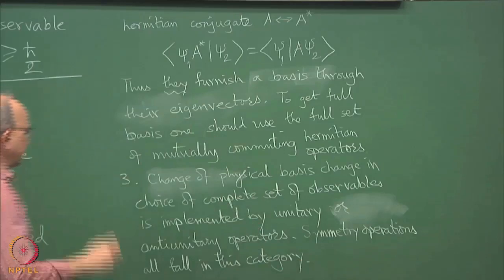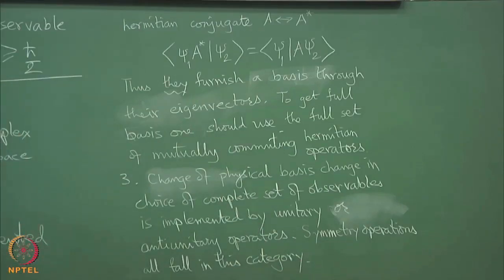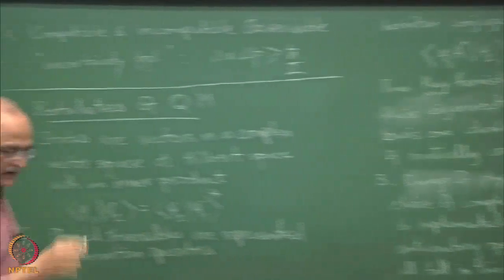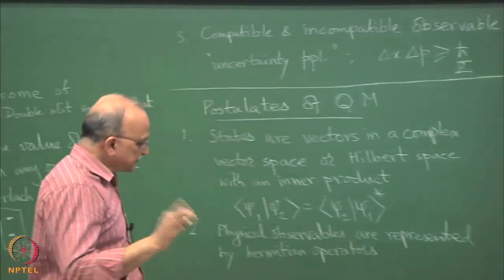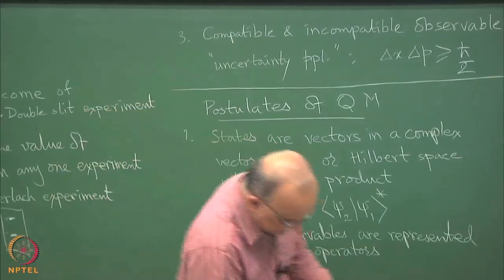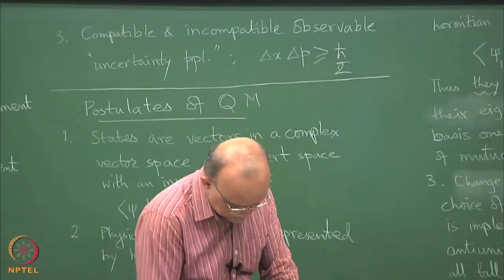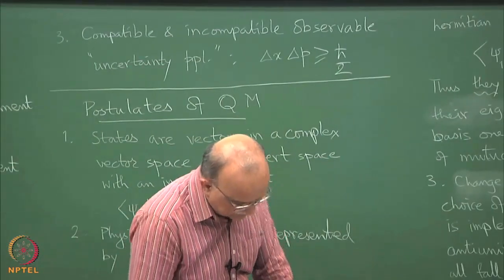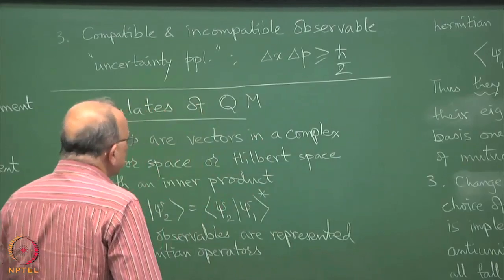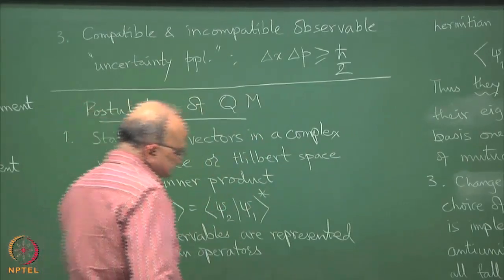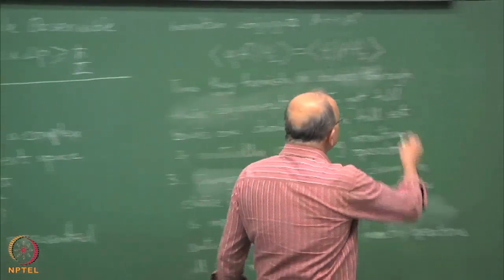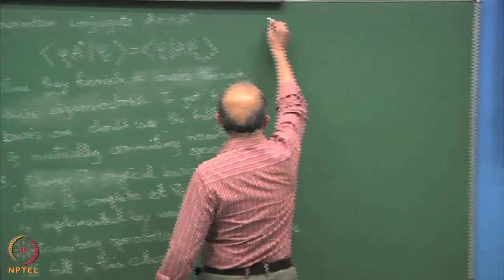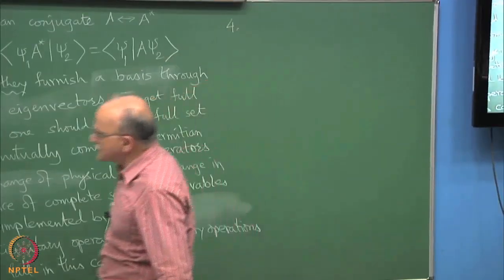The anti-unitary case is like time reversal — it involves a complex conjugation as well. The fourth postulate is the probabilistic interpretation: the definition of how outcomes are described.